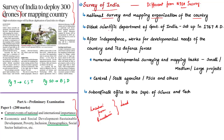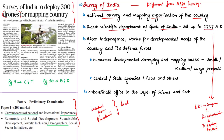Survey of India is the oldest scientific department of the Government of India, set up in 1767 AD. At that time, it assisted the British East India Company in conquering Indian territories for colonialism, requiring a scientific organization to explore the Indian terrain. With India's independence, the organization has been working for the developmental needs of the country and the defense forces. It now caters to numerous developmental surveying and mapping tasks for small, medium and large projects for various central and state government agencies and public sector units. It comes under the Department of Science and Technology, which is under the Ministry of Science and Technology.